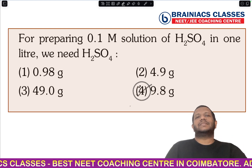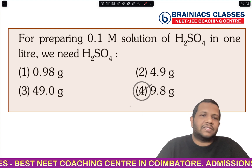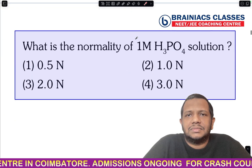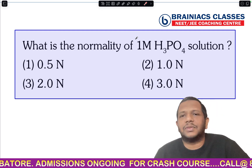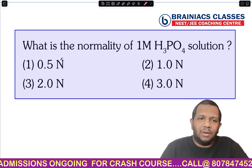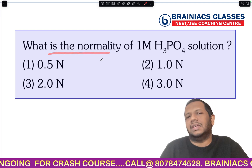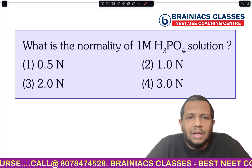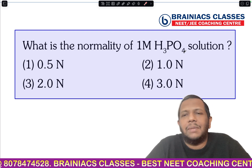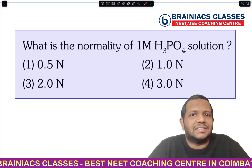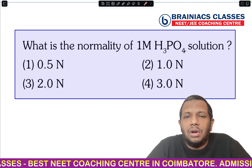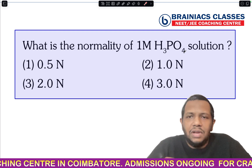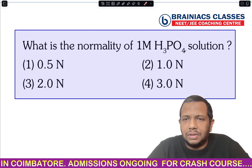Let's move to the next question: what is the normality of a 1 molar H₃PO₄ solution? To answer this, we need to know two things: what type of acid H₃PO₄ is — monobasic, dibasic, or tribasic — and how normality is related to molarity.